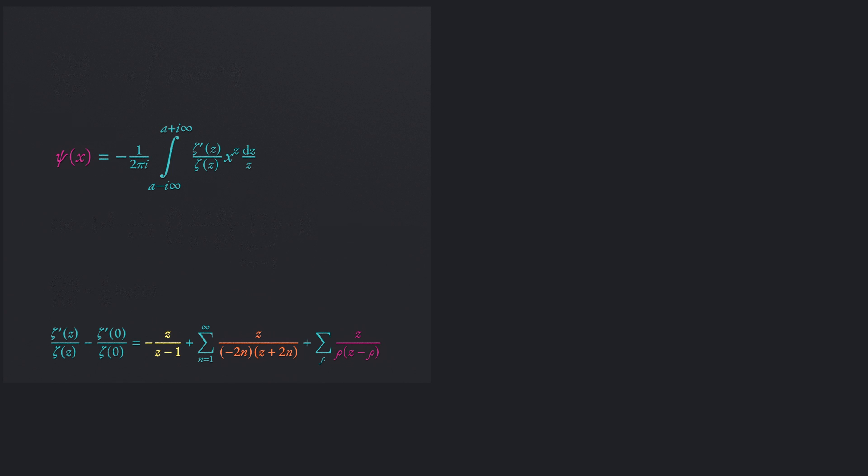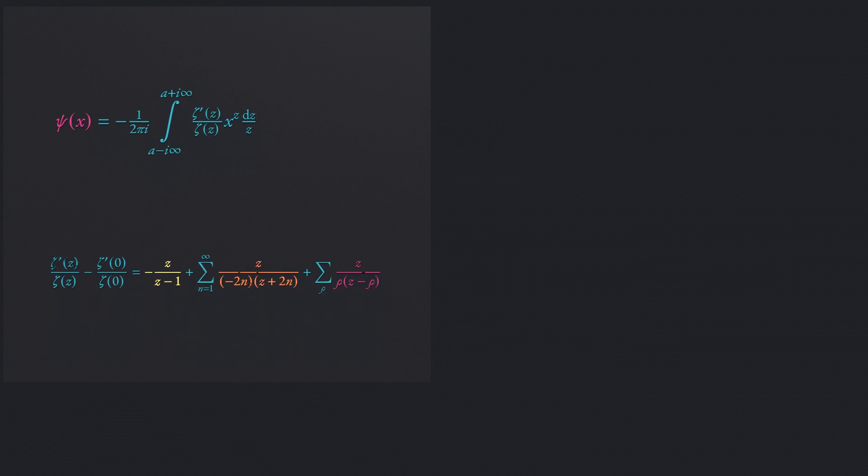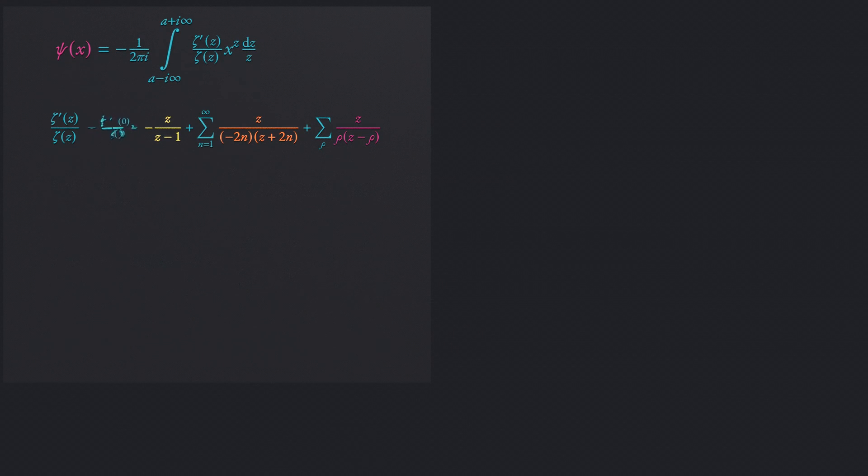The value at zero is actually known. It is the logarithm of 2π. At this point, we are almost at the finish line. The expression is substituted back into the integral. The integration can be performed. These are known integrals that are found in the lookup tables for the Mellin transforms. We end with the result stated at the beginning of this video.